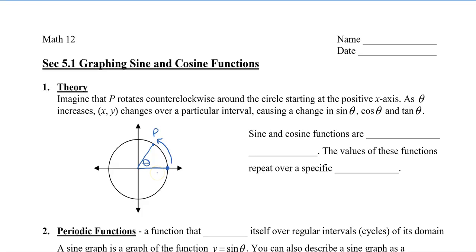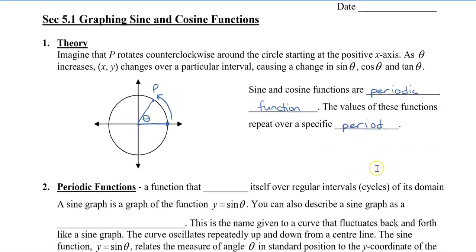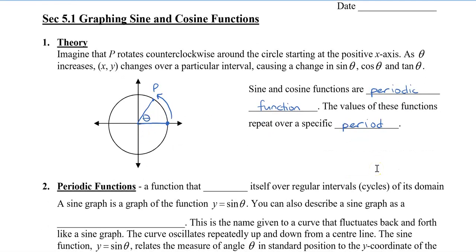The sine and cosine functions are periodic functions — so is tangent, actually. But in this video we're going to concentrate on sine theta and cosine theta because they're related, and you'll see how they are related. The values of these functions repeat over a specific period. This gives us something called a periodic function, which is a function that repeats itself over regular intervals of its domain.